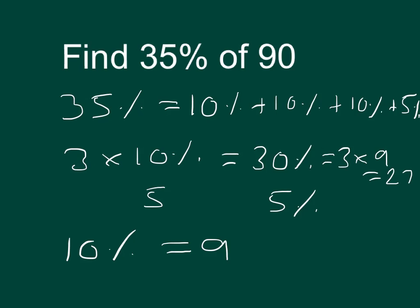5% is half of 9, which is 4.5. So 35% can be found by adding 30%, which was 27, to 4.5. So 27 and 4 is 31, and then add on the 0.5.